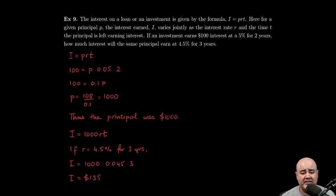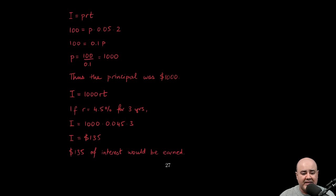So what we can say at this stage is that the principal was $1,000. That is how much money was either borrowed or invested. So using that constant of variation, we can write down the equation of our model. So I will be 1,000 times rate times time.